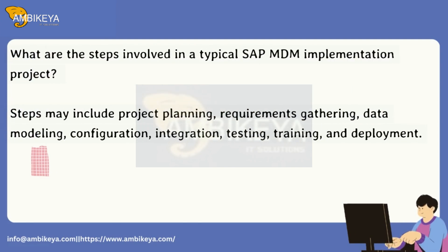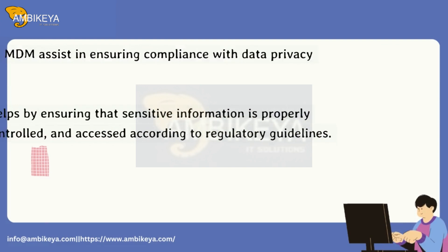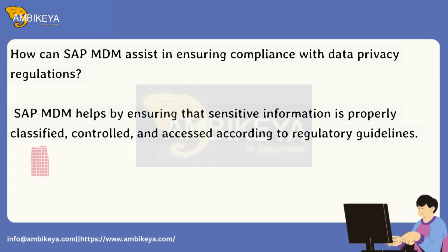What are the steps involved in a typical SAP MDM implementation project? Steps may include project planning, requirements gathering, data modeling, configuration, integration, testing, training, and deployment. How can SAP MDM assist in ensuring compliance with data privacy regulations? SAP MDM helps by ensuring that sensitive information is properly classified, controlled, and accessed according to regulatory guidelines.